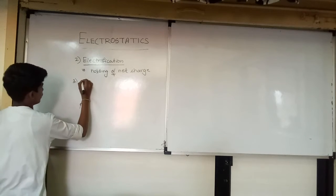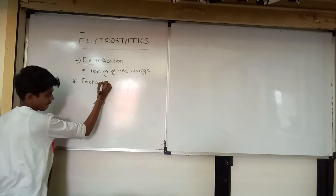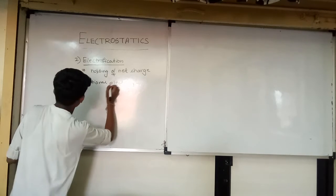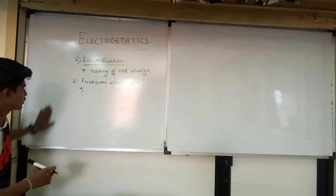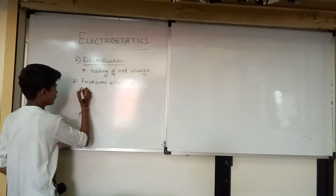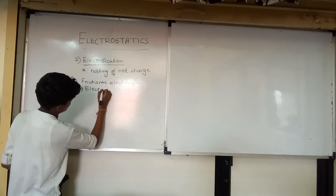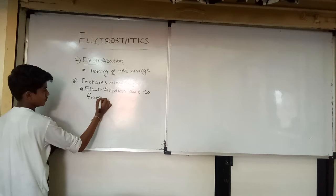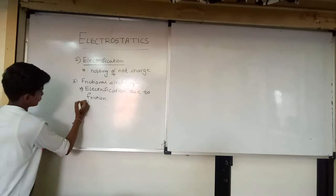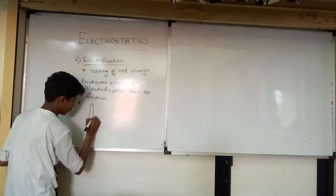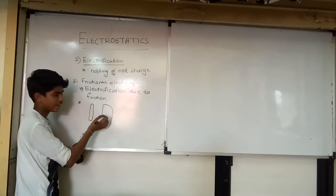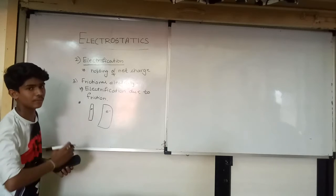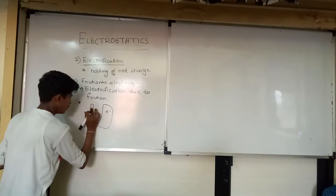The third topic is frictional electricity. It is defined as the electricity produced due to friction during electrification. We take a glass rod and a silk cloth, and when we rub them, electrons get transferred from the glass rod to the silk cloth, and a charge is produced by the friction.